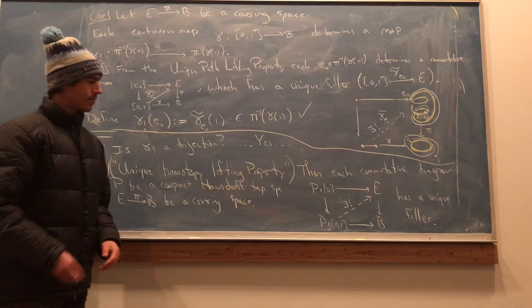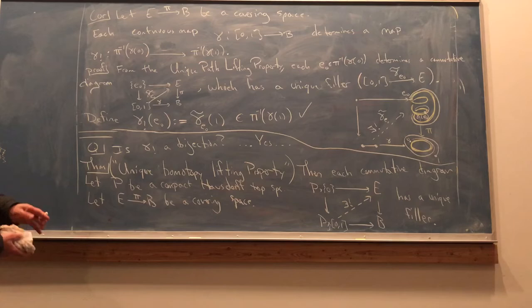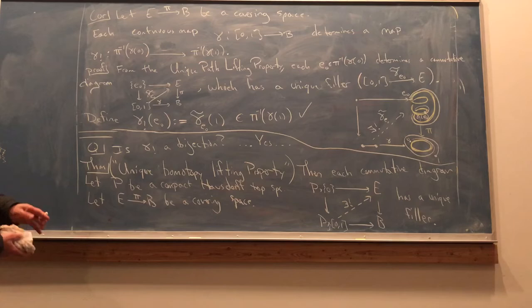So that's the unique homotopy lifting property. I'm going to elect to postpone to not prove it right now. And let's see how to establish that this is a bijection premised on this.